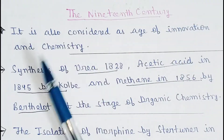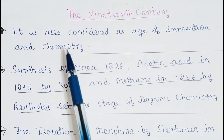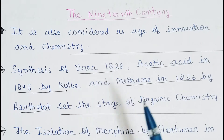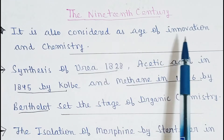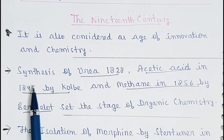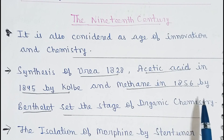Coming to the 19th century — it is also considered the age of innovation in chemistry. यहाँ से जो main medicinal chemistry थी उसकी शुरुआत हुई, क्योंकि यहाँ पर बहुत से scientists मिलकर नई चीज़ों का discovery करते थे। The synthesis of urea in 1828, acetic acid in 1845 by Kolbe, and methane in 1856 by Berthelot set the stage of organic chemistry.